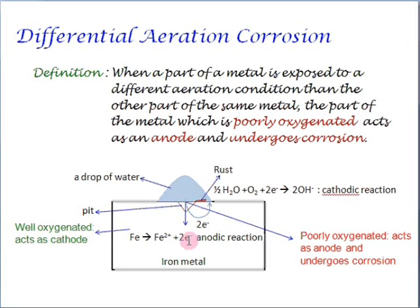Let us understand this better with an example. Assume that this rectangle is a piece of iron and a water droplet is placed over this. First, try to identify which part of the metal is most poorly oxygenated.